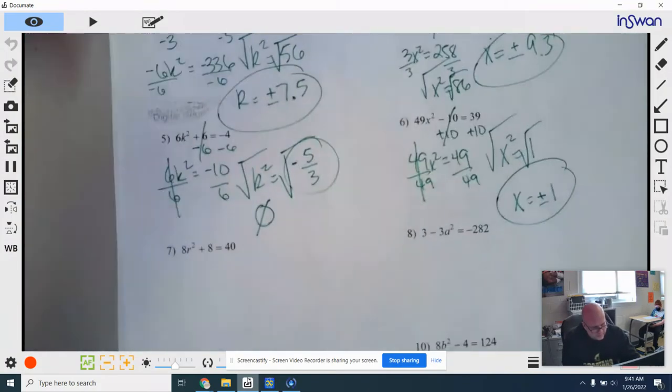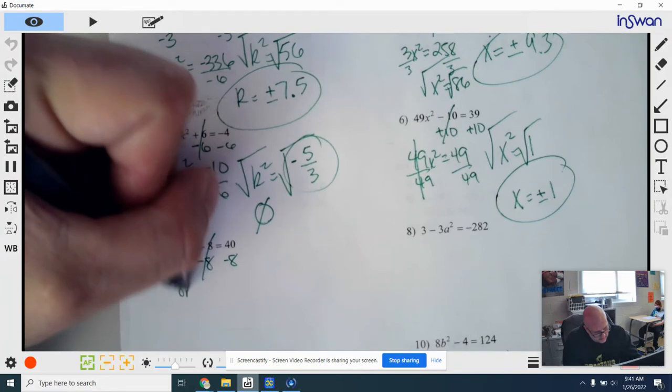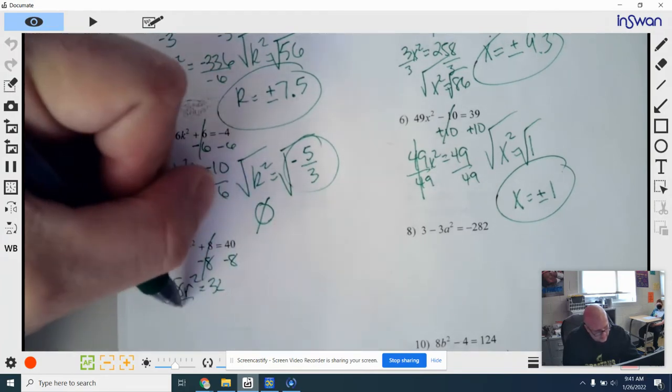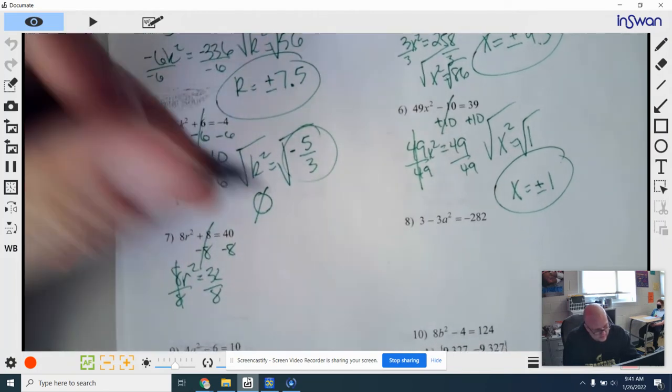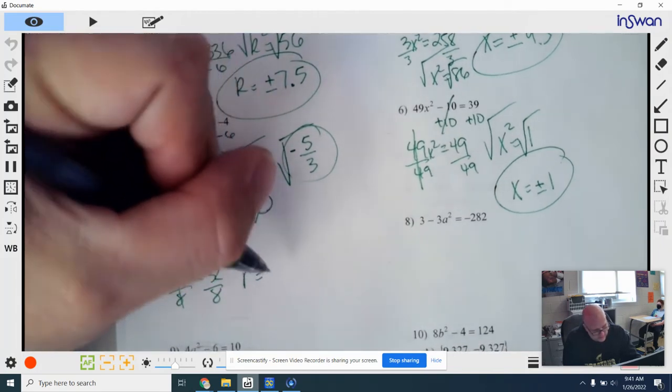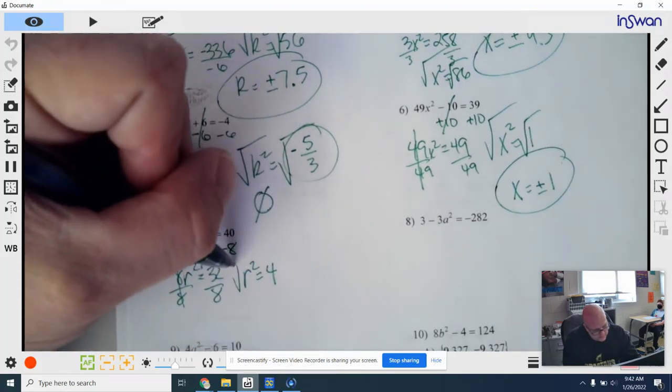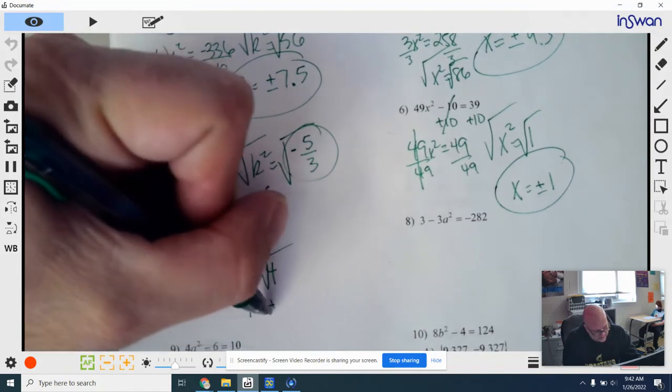Number 7. Subtract the 8. 8r squared equals 32. Divide both sides by 8. That cancels out. See, r squared is equal to 4. So you would do the square root. And then r is going to equal plus or minus 2.